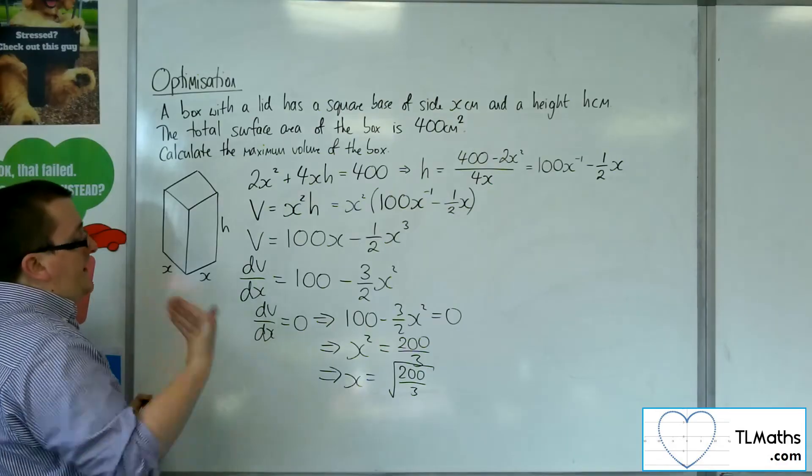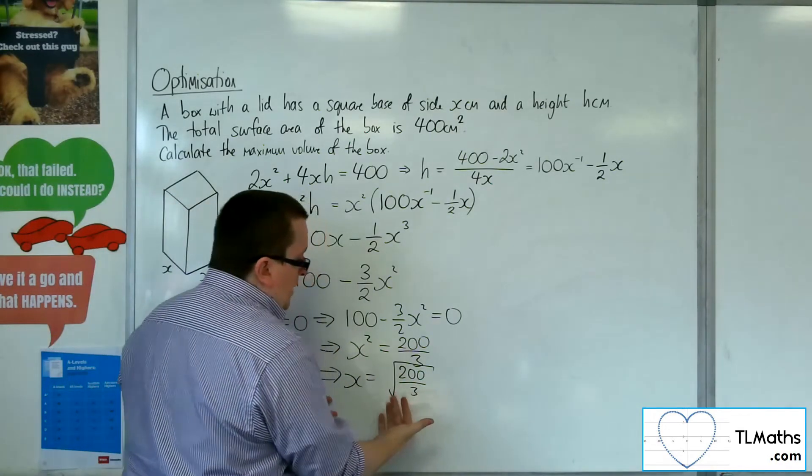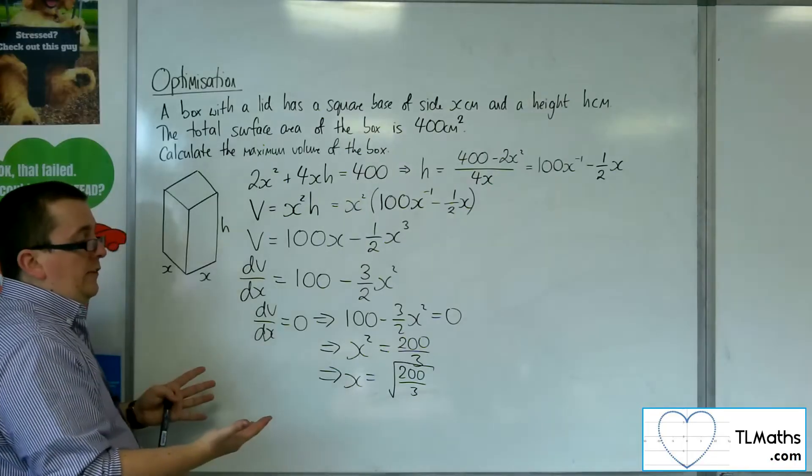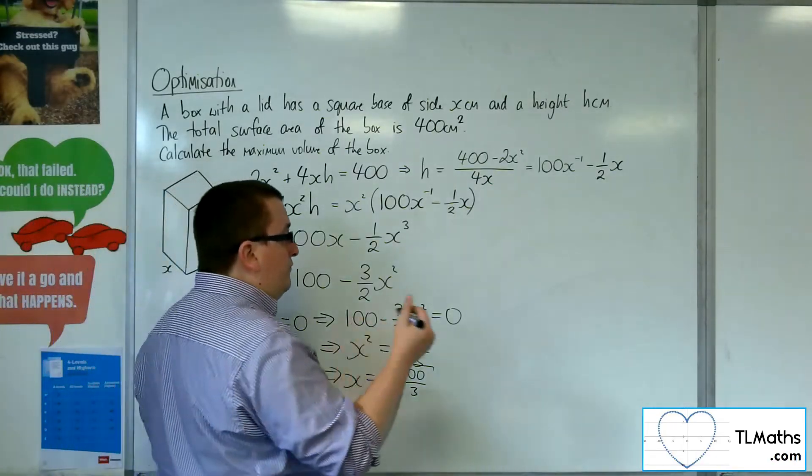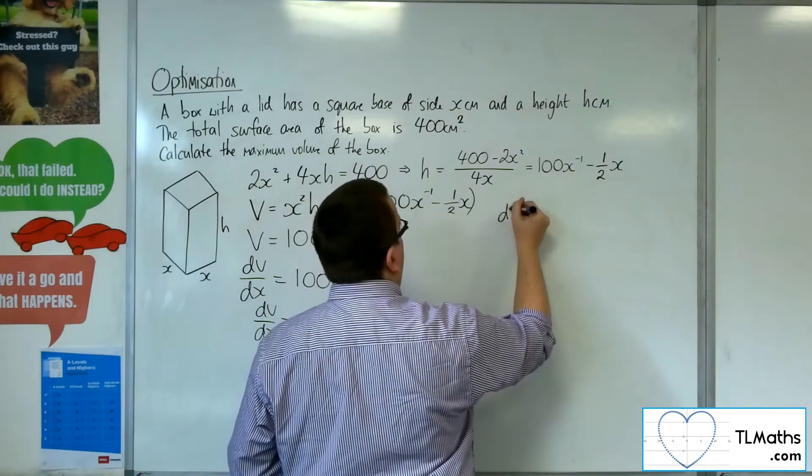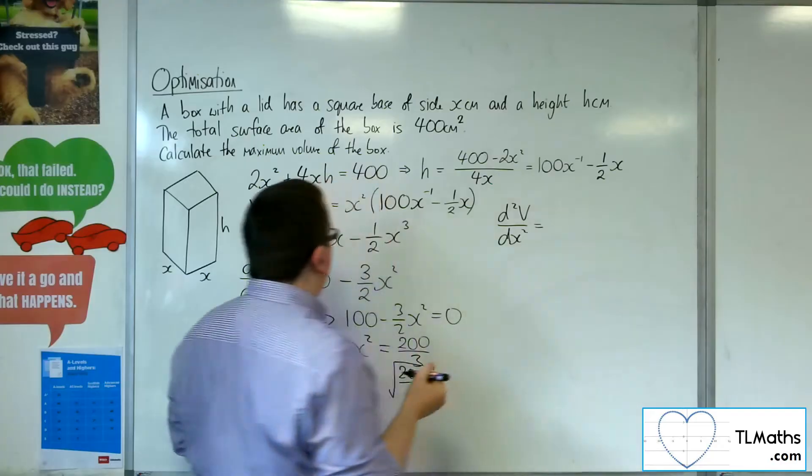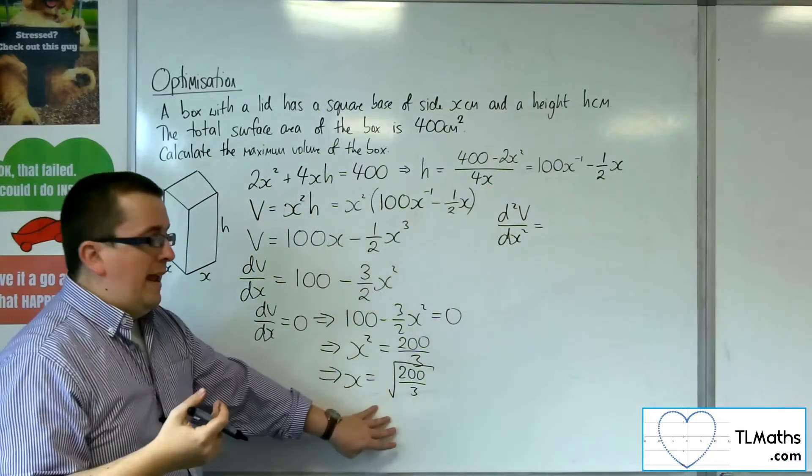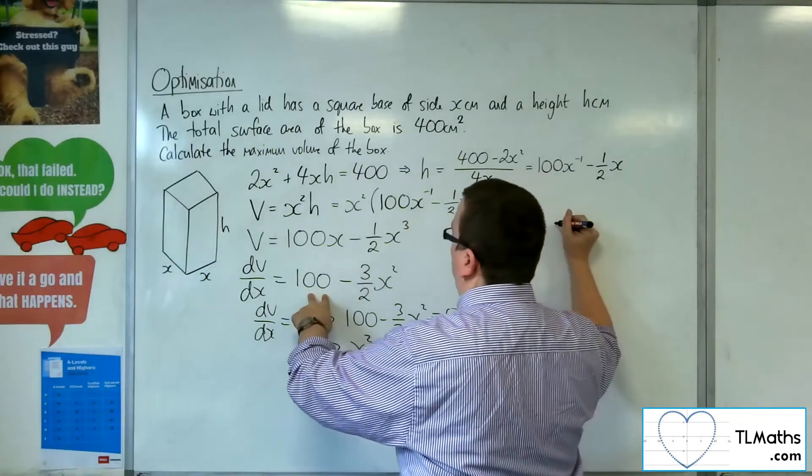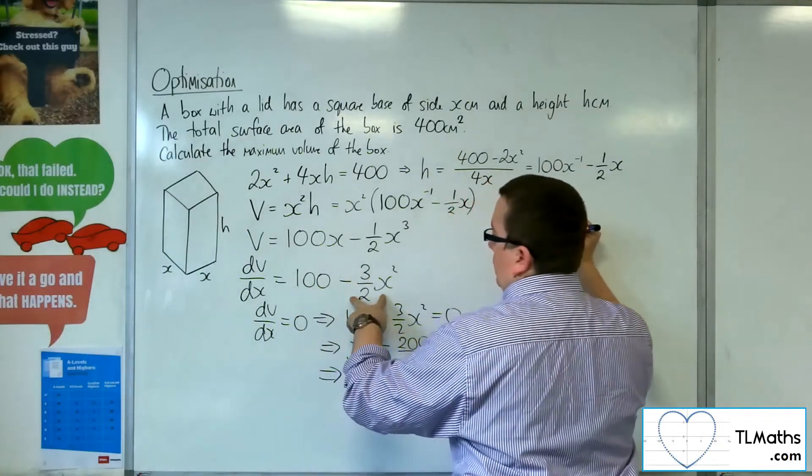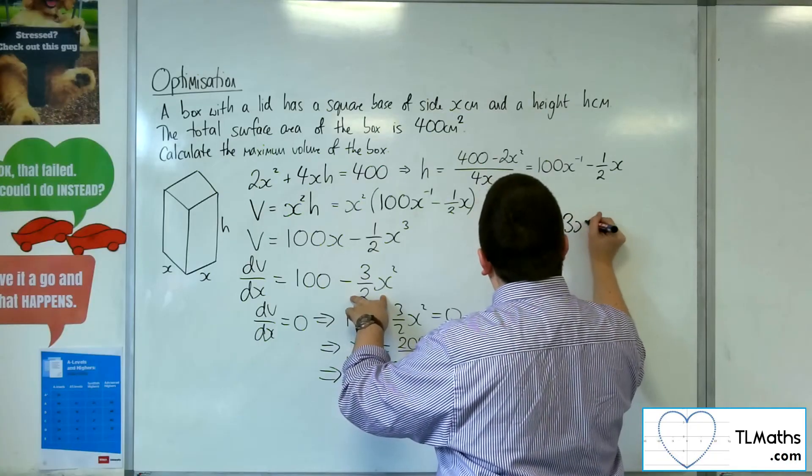Now I can determine whether this is a maximum. I would want to find the second derivative of the volume, substitute it in, and determine whether I get a positive or negative value. So 100 differentiates to 0, minus 3 halves x squared will differentiate to minus 3x.